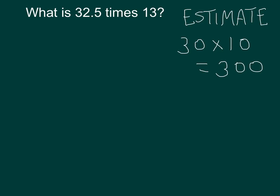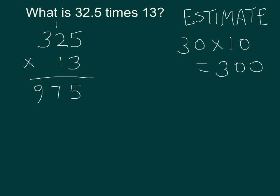Now, what I'm going to do is carry out the multiplication without the decimal point. I'm writing down 325 times 13, no decimal points, and doing regular multiplication. So here we go. 3 times 5 is 15 — there's the 5, carry the 1. 3 times 2 plus 1 is 7. And 3 times 3 is 9. Because I am now moving to this spot, I need to put in a helpful 0 down below.